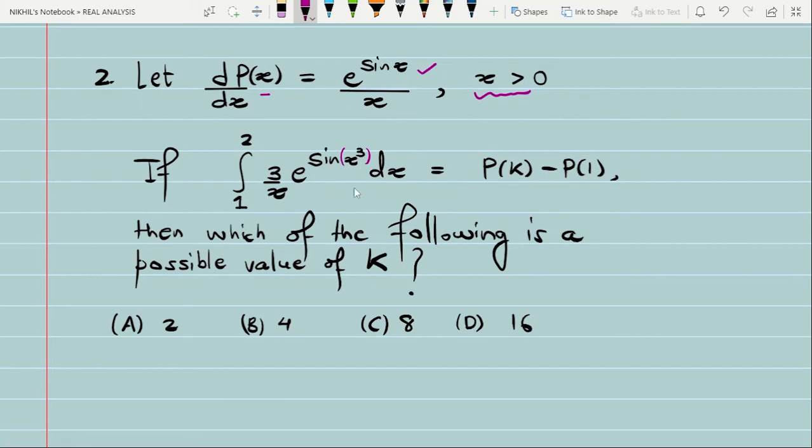If you integrate this from a range of x - if you take the values of x from 1 to 2 - then this comes out to be P(k) minus P(1). You remember, this was our P here, this is our P function. So, in terms of P, you are able to find it. Then you have to answer: what are the possible values of k? For which values of k might this hold? Maybe there is one value or there are more than one value. So, you have to just solve this problem.